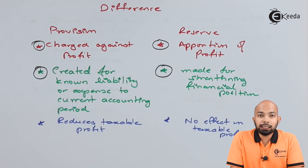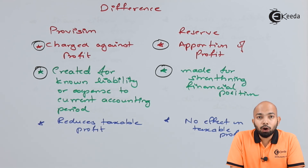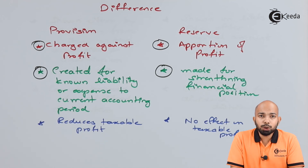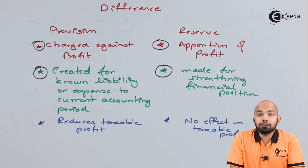Provision is actually created for a known liability or known expense. It reduces the balance sheet value and the profit and loss account when creating a provision. Hence, charging provision means charging the profit and loss account, and it is only for a known liability or known expense expected in the near future. Reserve, on the other hand, strengthens the financial transactions and financial condition of the company — reserve adds up to the value of your company.